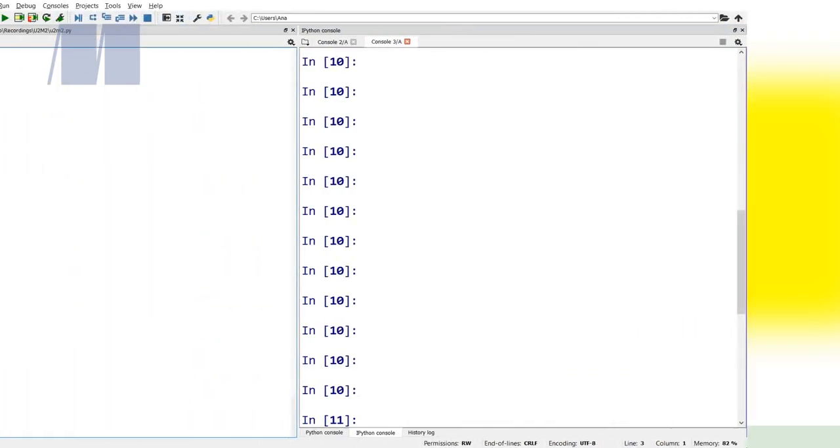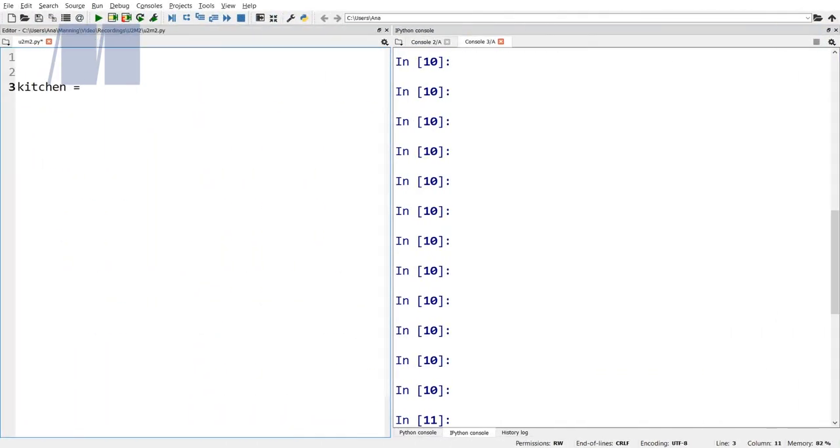Here's my answer. I have kitchen equals 100, living underscore room equals 400, bedroom equals 200, and bathroom equals 100.